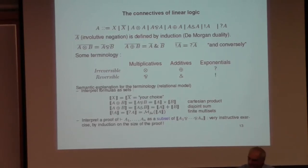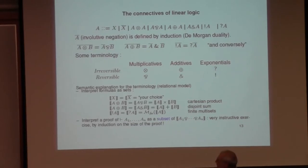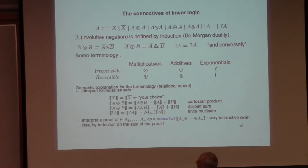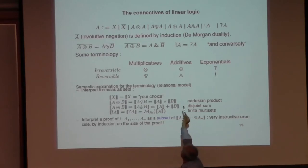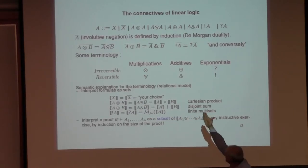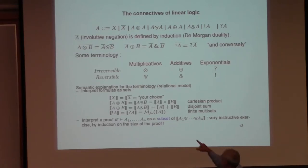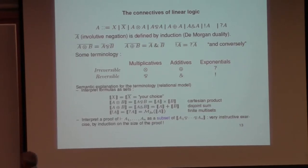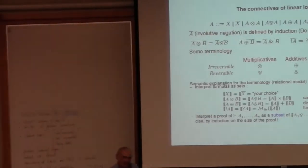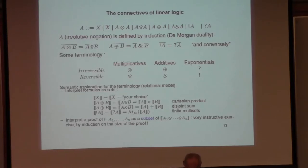I improved the slide by giving you a table, because our discussion in this series of lectures is more along the distinction between irreversible and reversible. And I want to show you, through this table, that this goes completely orthogonally to the distinction between multiplicatives and additives. That means that of the two multiplicatives, one is reversible and the other is irreversible, and the same for additives. So again, the distinction that will matter for us is between irreversible and reversible, and we will really exploit it when we come to focalization.